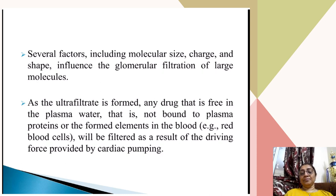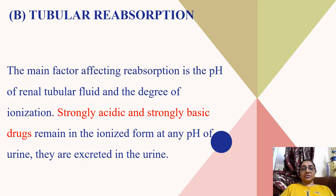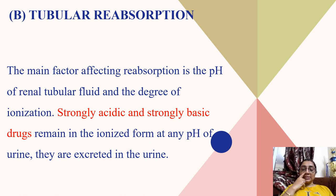Passive tubular reabsorption: drugs present in the tubular fluid are reabsorbed through the tubular epithelium back into the tissue and stored in the body. The main factors affecting passive reabsorption are the pH of renal tubular fluid and the degree of ionization. Strongly acidic and strongly basic drugs remain in ionized form at the pH of urine and are therefore excreted in urine.